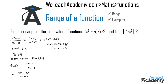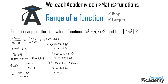We can cancel (x - 2) from numerator and denominator, giving f(x) = x + 2. Let y = x + 2. Since x is not equal to 2, substituting x = 2 gives y = 2 + 2 = 4. Therefore, if x ≠ 2, then y ≠ 4. The range of this function is all real numbers except 4.